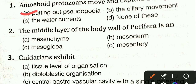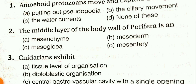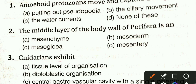Options: mesenchyma, mesoderm, mesoglea, mesentry. The answer is mesenchyma. Cnidarians exhibit tissue level of organization, diploblastic organization, central gastrovascular cavity with single opening, and all of these. The answer is D, all of these.